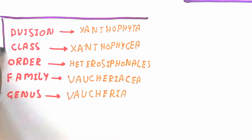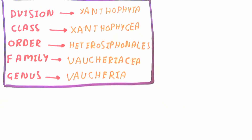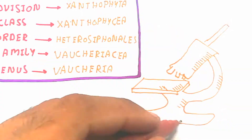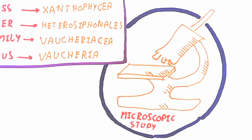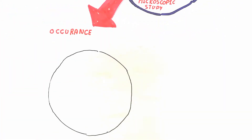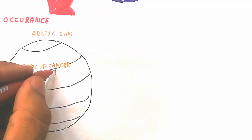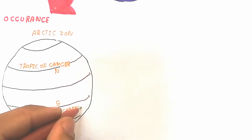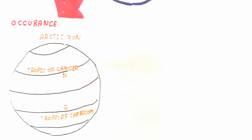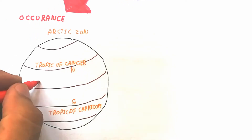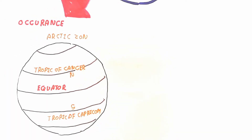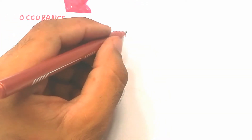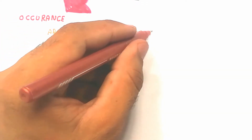We will talk about the microscopic study of Vaucheria. First, we will discuss the occurrence of Vaucheria. Vaucheria is present in the temperate region. The temperate region is the area in the middle side of the equator, between the upper and lower sides of the north and south tropical regions — that is, above the Tropic of Cancer and below the Tropic of Capricorn.